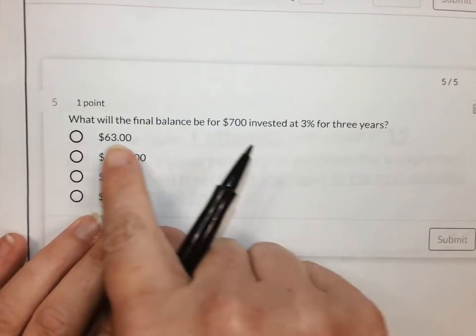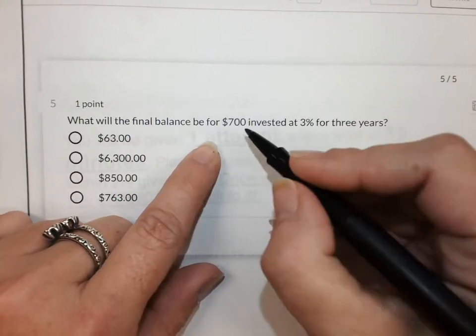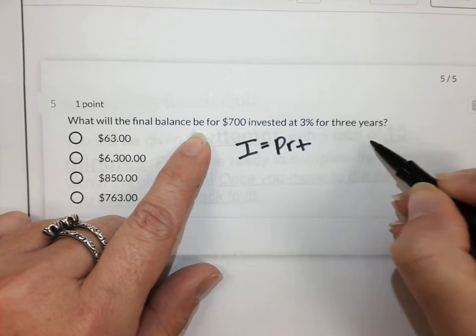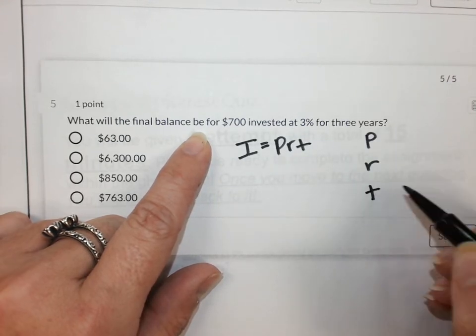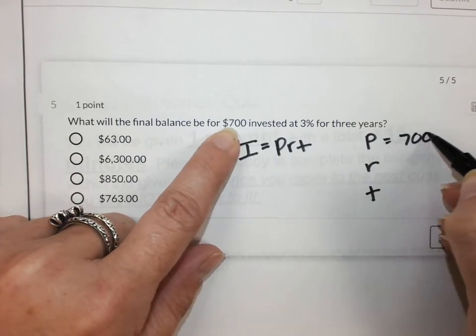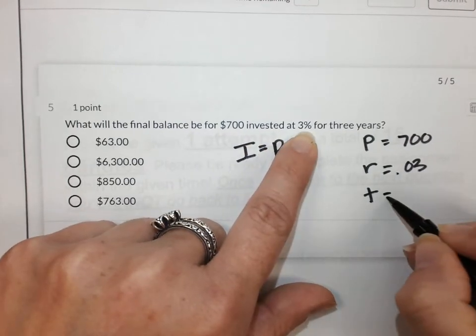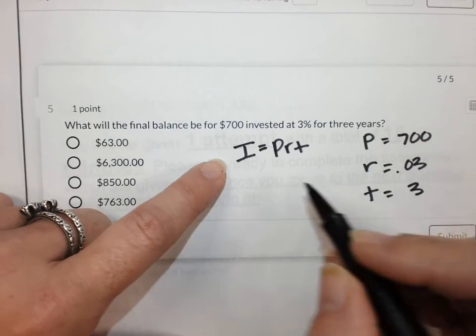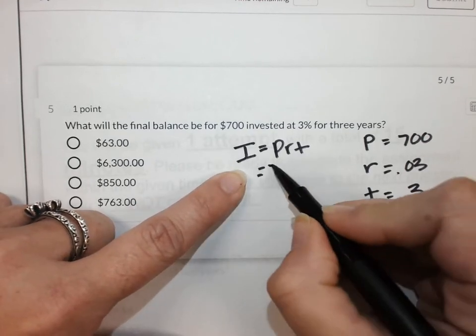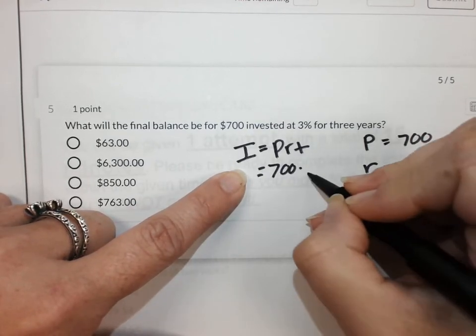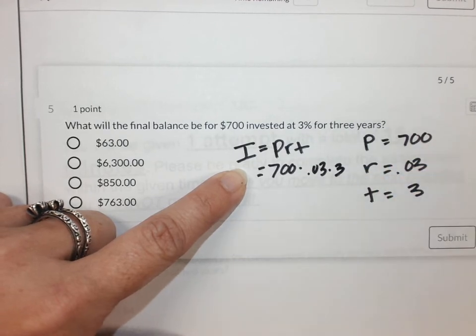Alright. Number five, what will the final balance be? So they're not asking about interest. Alright. So $700 principal invested at three percent for three years. Remember, we're solving for I, right? So we'll say 700 times 0.03 times three.